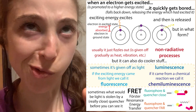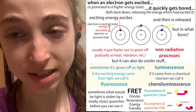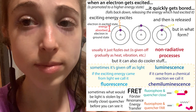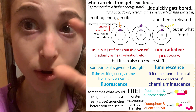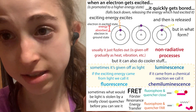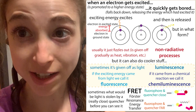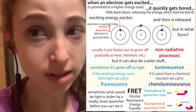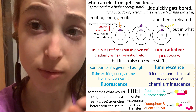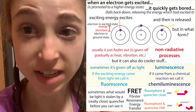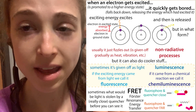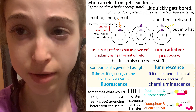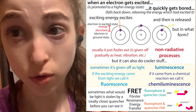With chemiluminescence, it's basically like the molecule makes a chemical product that has more energy than it needs, and now it gives off that energy in the form of light. Luminescence is an overarching term that encompasses these light-emitting reactions. Fluorescence is specifically when the absorbed energy is coming from light, and chemiluminescence is when it's coming from a chemical reaction.